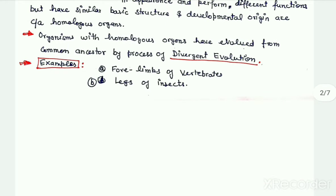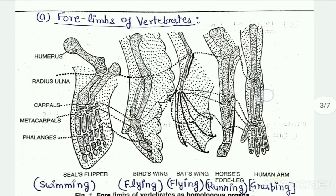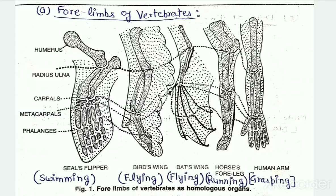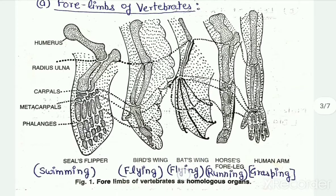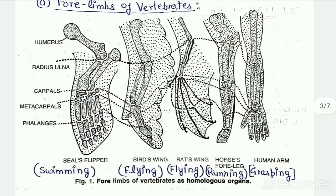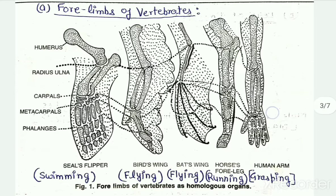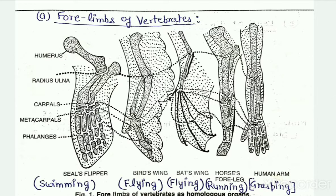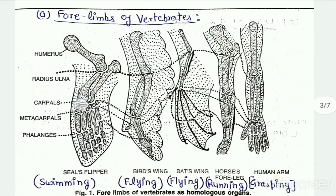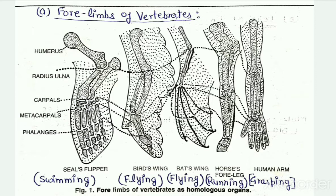Let us see two important examples of homologous organs. First are the forelimbs of vertebrates, which may be adapted for performing different functions. For example, the flippers of seals are adapted for swimming, the wings of birds and bats are adapted for flying, horses' legs are adapted for running, and humans' hands are adapted for holding or grasping. But if we see their basic structure, all the forelimbs of different vertebrates have similar bones and similar arrangement of bones — they all consist of humerus, radius-ulna, carpals, metacarpals, and other bones.